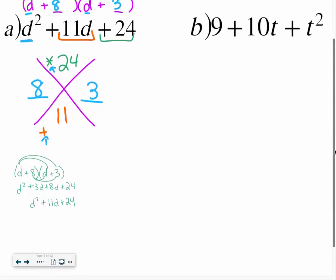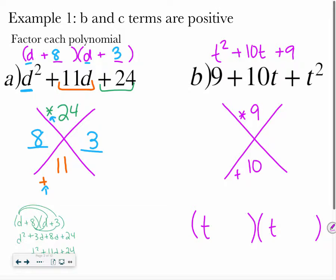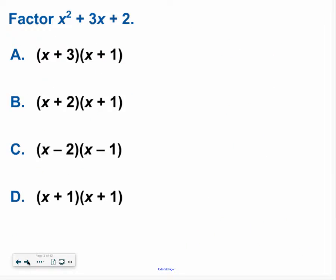Let's try another one. We have our trinomial written a little bit backwards, so I'm going to rewrite it in standard form: T squared plus 10T plus 9. I need it to add to 10 and multiply to 9. Some numbers that add to 10: 5 plus 5 doesn't multiply to 9; 7 plus 3 and 6 plus 4 don't multiply to 9. But 9 times 1 gives me 9, and 9 plus 1 gives me 10. So I'm going to say T plus 9 times T plus 1, and I am done.